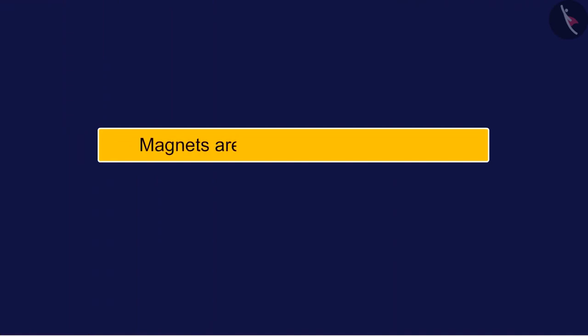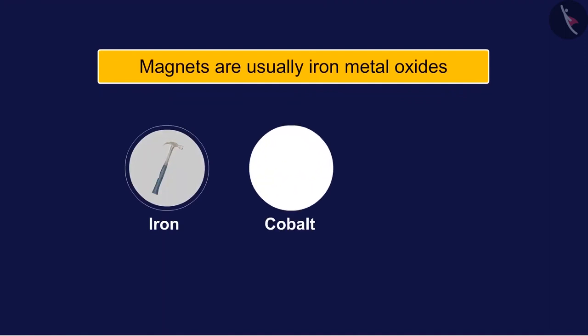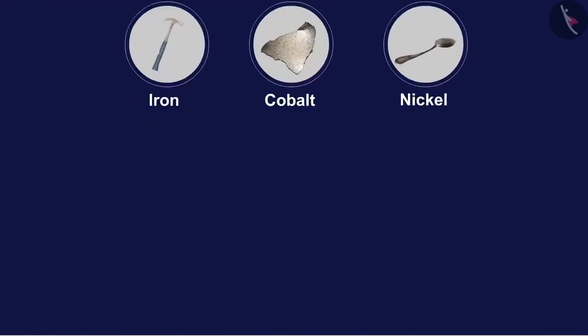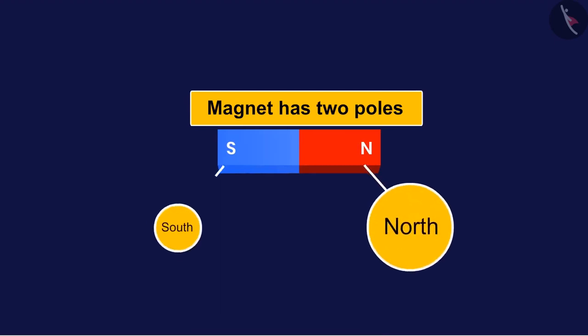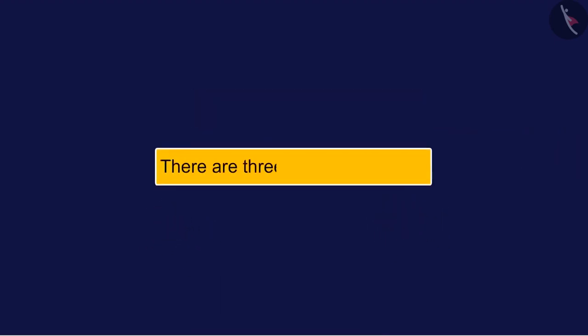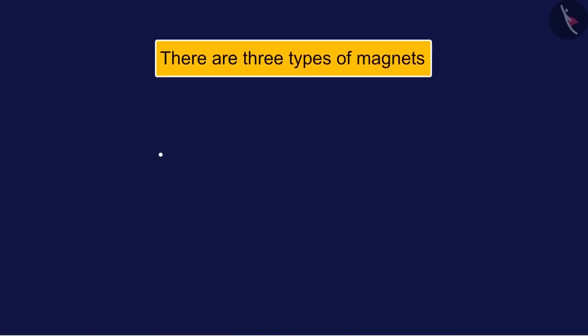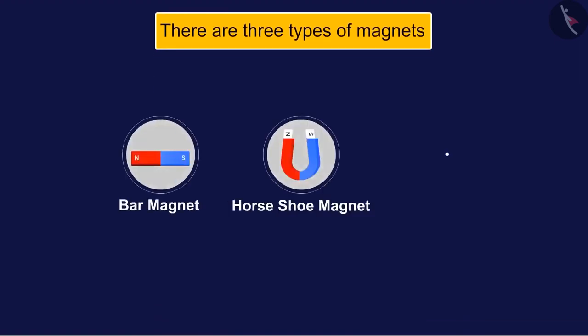Magnets are usually iron metal oxides that attract certain metals such as iron, cobalt, and nickel. A magnet has two poles: the north and the south. There are three types of magnets we see: bar magnet, horseshoe magnet, and ring magnet.